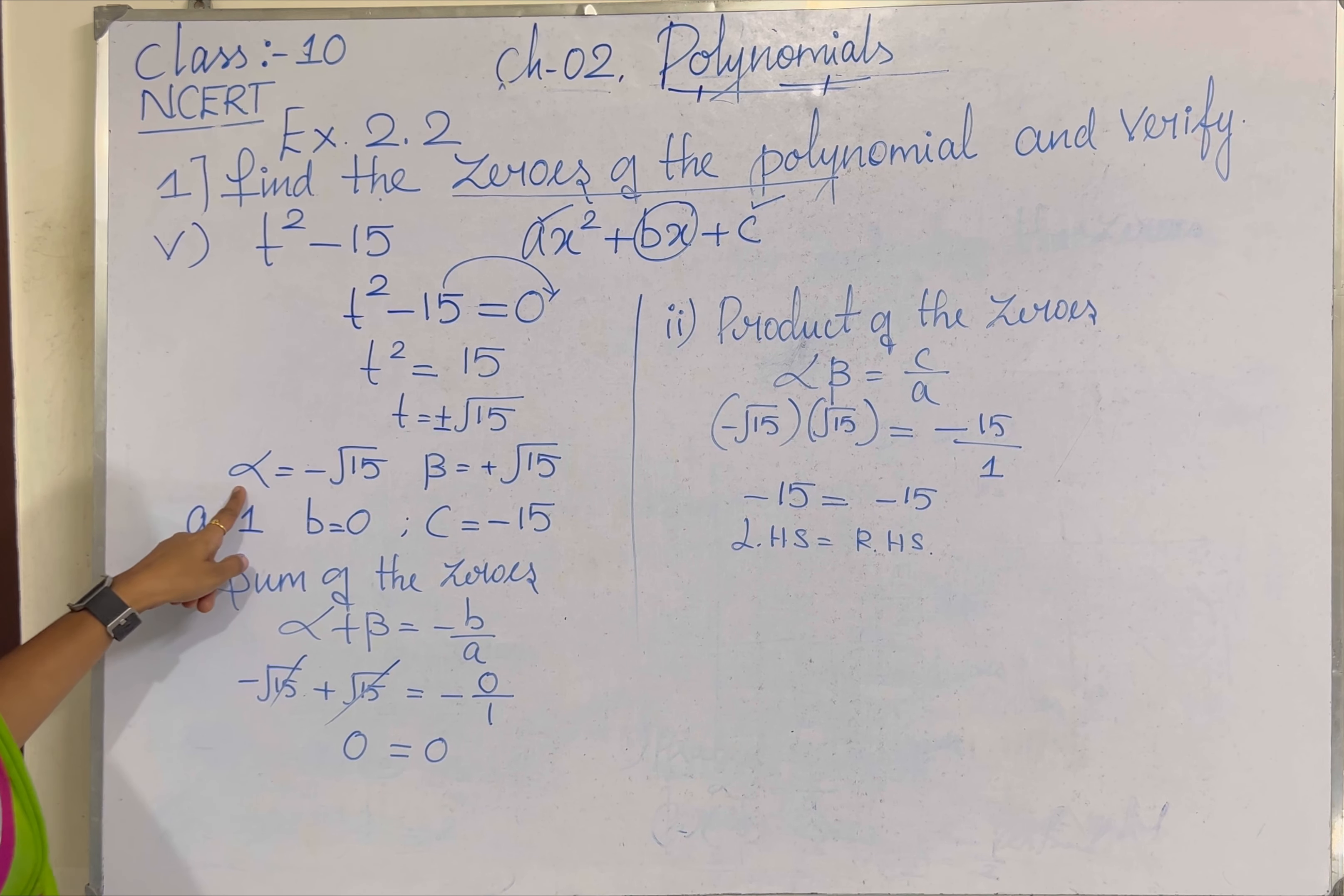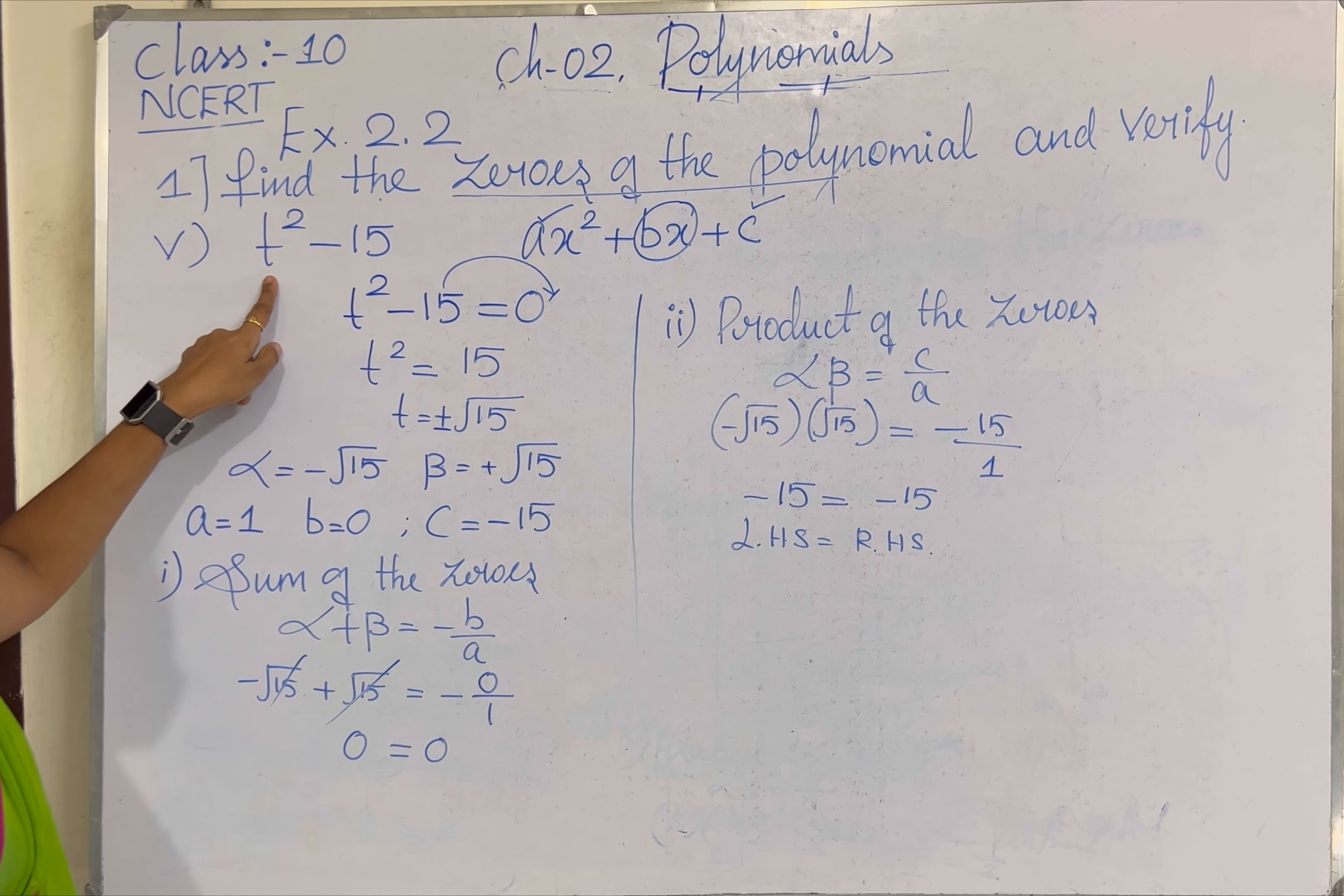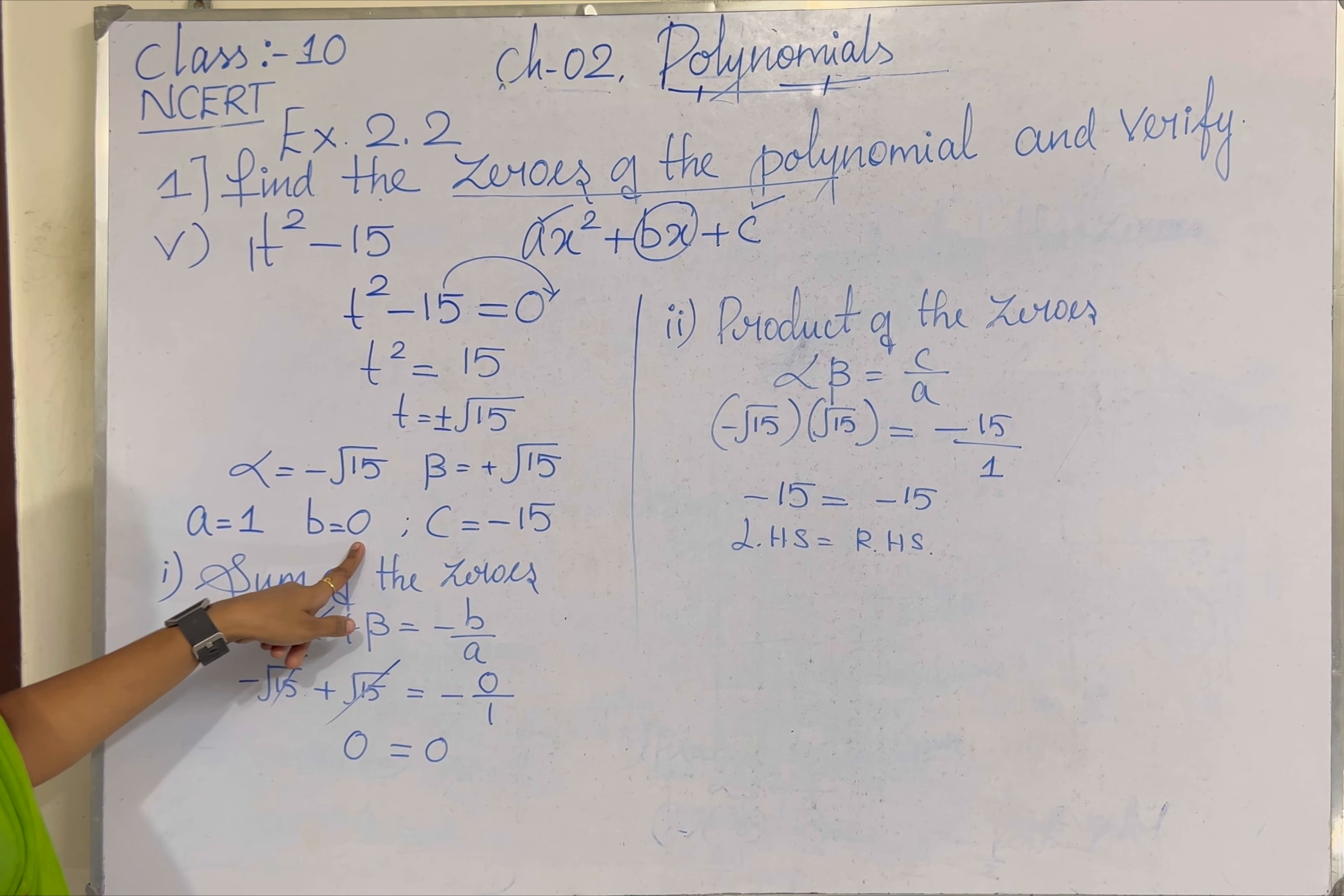Which means alpha equal to minus root 15 and beta equal to plus root 15. Now we need to write the coefficient A, B and C. A the coefficient of T square is 1, and B the coefficient of T, since it is missing, the term B will be 0. C equal to the constant term minus 15.